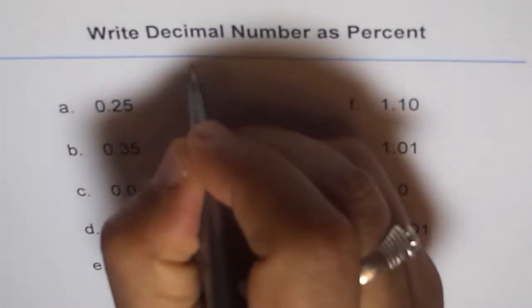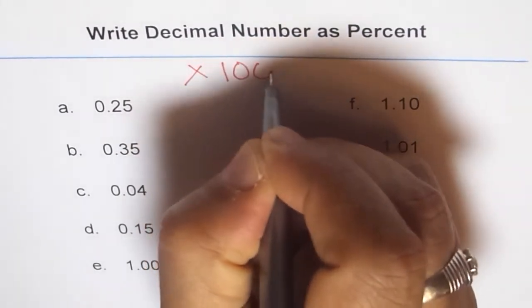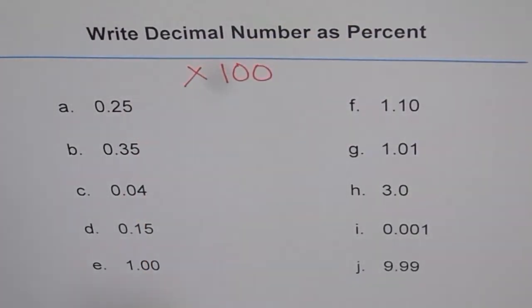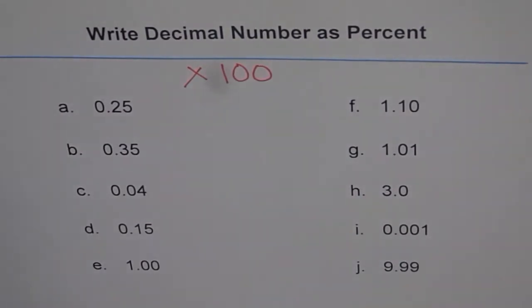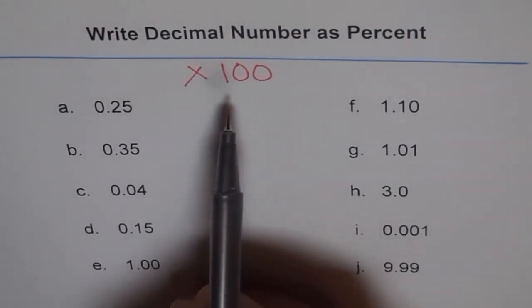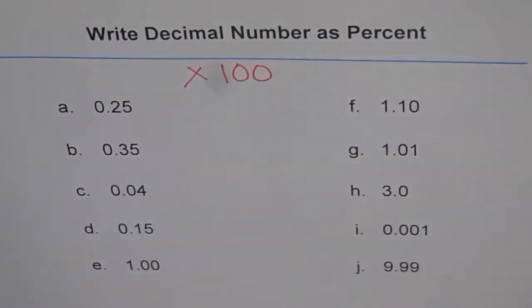So times every number by 100—that gives you the answer. When you times any number by 100, what happens to your decimal number? It moves two places to the right because you're expecting a bigger number.